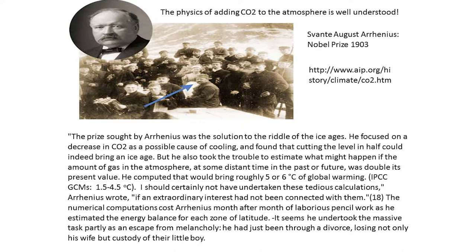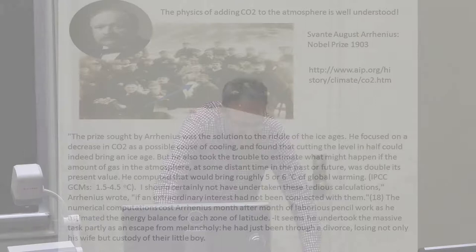Another evidence is knowing the physics of the atmosphere. The physics of the atmosphere and of the transfer of radiation through the atmosphere is well understood. In 1903, Arrhenius looked at what was the effect of adding CO2 to the atmosphere. The prize sought by Arrhenius was the solution to the riddle of the ice ages. He focused on a decrease in CO2 as a possible cause of cooling and found that cutting the level in half could indeed bring an ice age. He also estimated what might happen if the amount of CO2 was double his present value — he computed that would bring roughly five or six degrees centigrade of global warming.